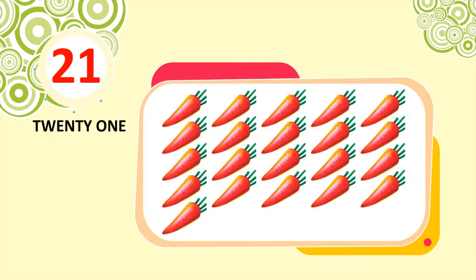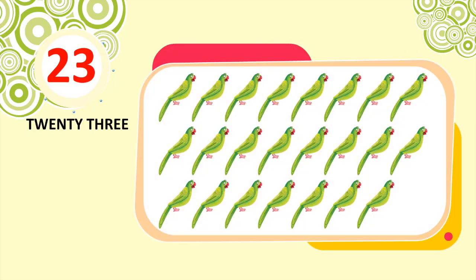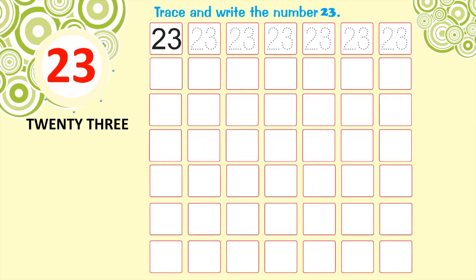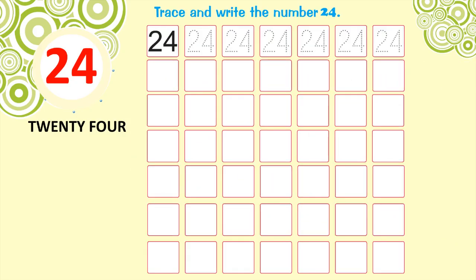21. 21 carrots. 22. 22 cakes. 23. 23 parrots. Trace and write the number 23. 24. 24 pens. Trace and write the number 24.